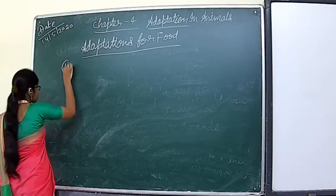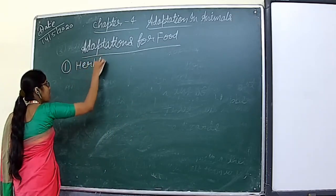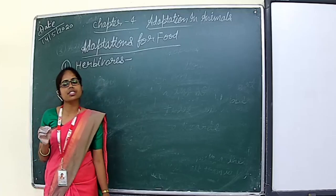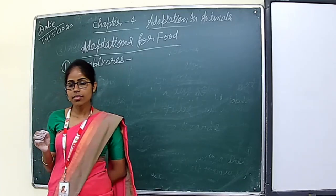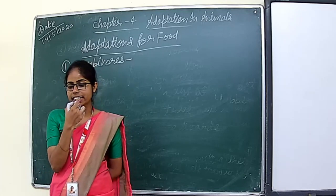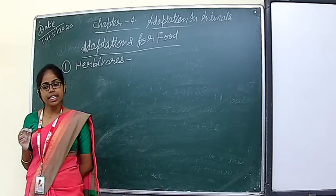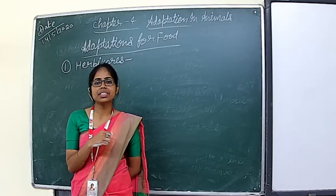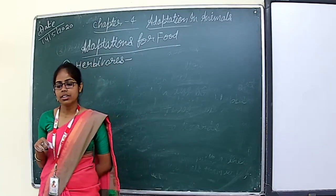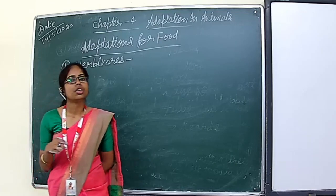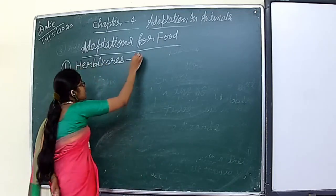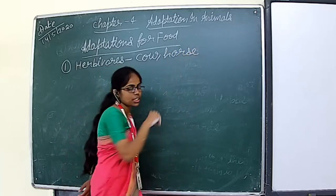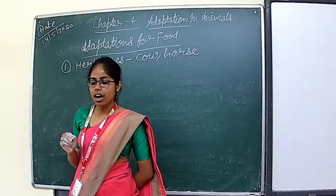Herbivores are those animals which eat only plants, fruits, and vegetables. They have sharp front teeth to cut grass and leaves, and strong grinding teeth at the back of their mouth to chew plant food. Examples of herbivore animals are cow, horse, goat, elephant, giraffe, and deer.